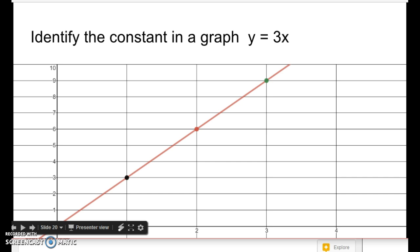To identify the constant in a graph, in this case it's y equals 3x. So if you start on the bottom at 0, if I go up 3 and I move over 1, if I go up 3 I move over 1, if I go up 3 I move over 1, so the y value is always going to be 1 to 3 times the x value.